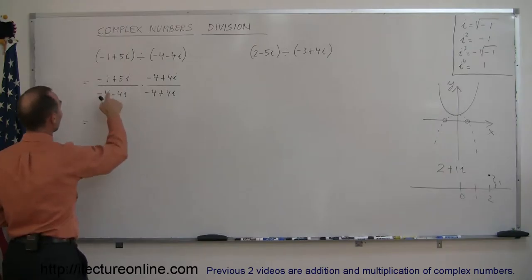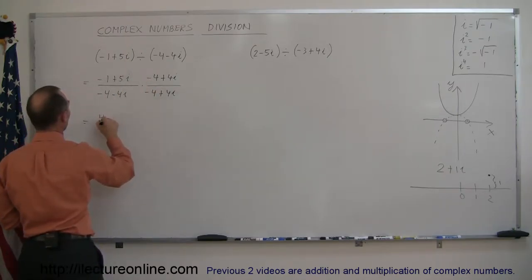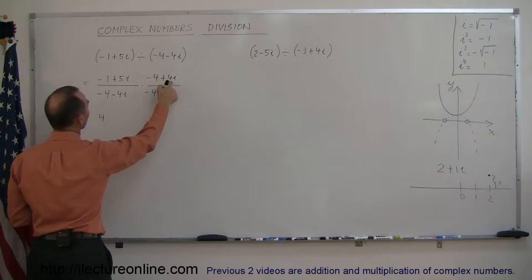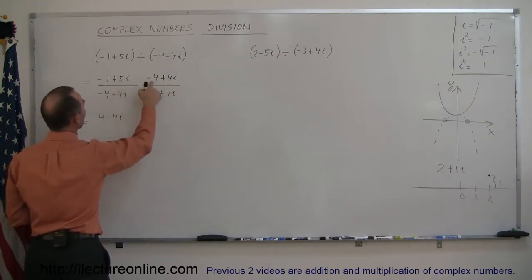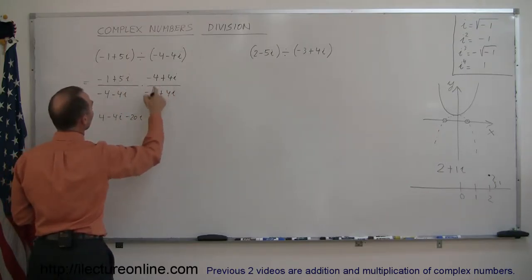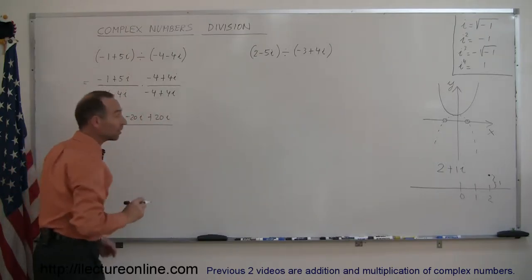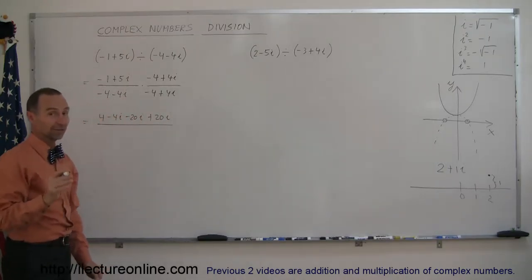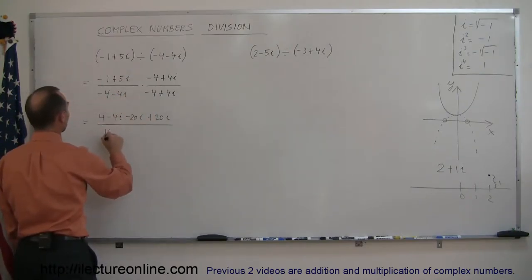Let's multiply the numerator. We have minus 1 times minus 4, which is plus 4. Minus 1 times 4i is minus 4i. 5i times minus 4 is minus 20i. And 5i times 4i is plus 20i squared. Now we multiply the denominators together: minus 4 times minus 4 is plus 16.